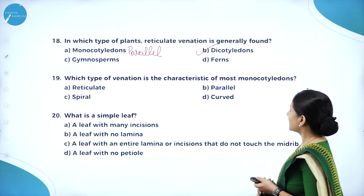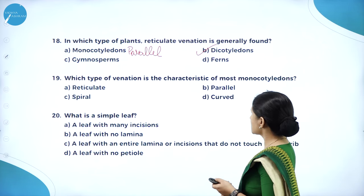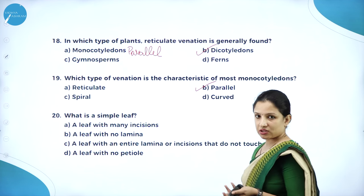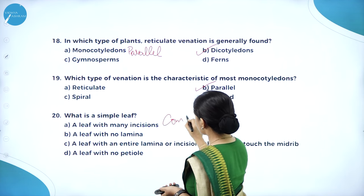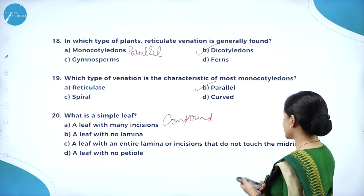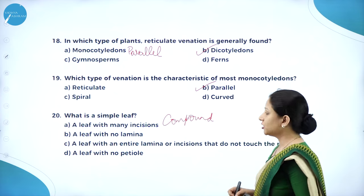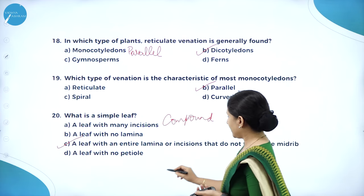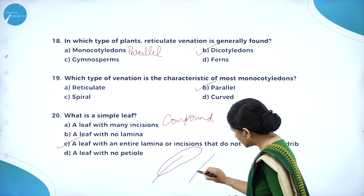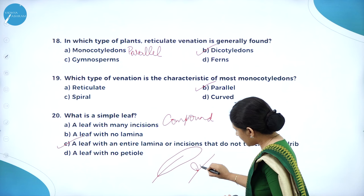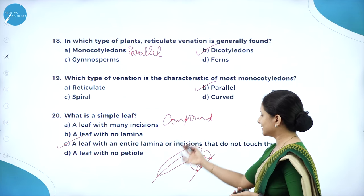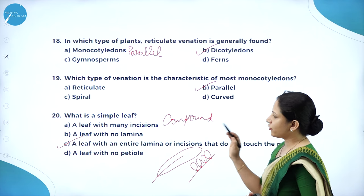In which type of plants is reticulate venation generally found? It is in dicotyledons — monocotyledons have parallel venation. Which type of venation is characteristic of most monocotyledons? It is parallel venation. What is a simple leaf? A leaf with an entire lamina, or incisions that do not touch the midrib — option C is the right answer.